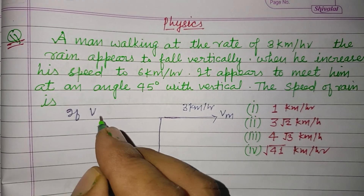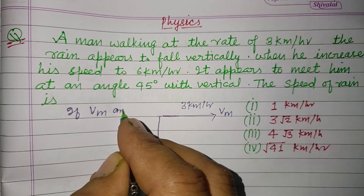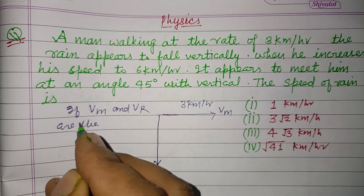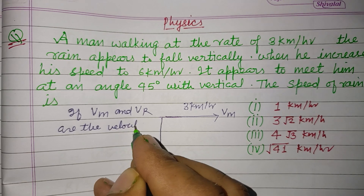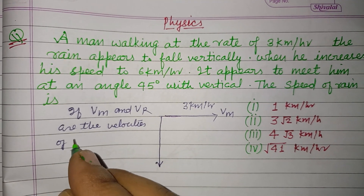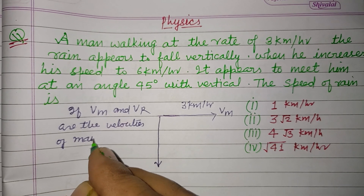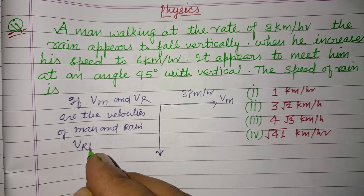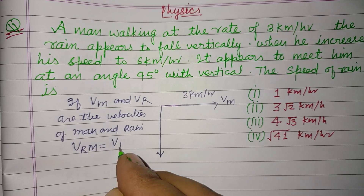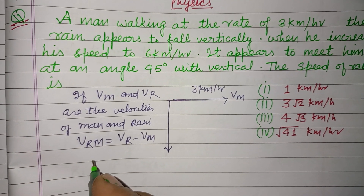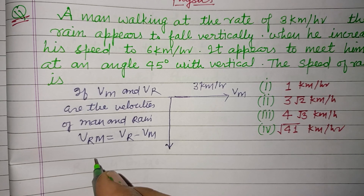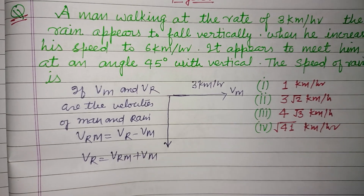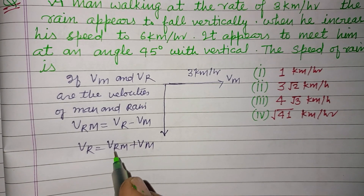If V_M and V_R are the velocities of man and rain, then the relative velocity V_RM equals V_R minus V_M, or we write it as V_R equals V_RM plus V_M. So V_R is the resultant of V_RM plus V_M.